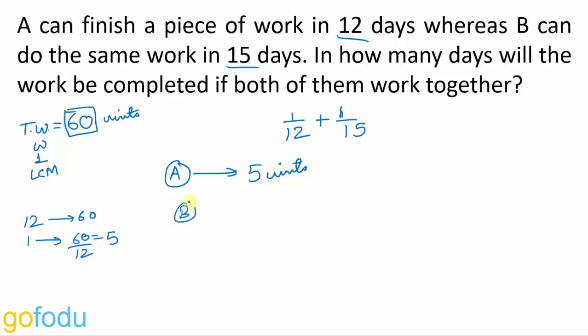Similarly, B takes 15 days to finish 60 units of work. So in 1 day, B will be doing 60 upon 15, that is 4 units of work. Now we can add these 2 together to get total work done by both A and B in 1 day. As we have seen in the previous video, we can add rates. We can add the work done in 1 day by A and B individually. So together they will be doing 5 plus 4, 9 units of work in 1 day.